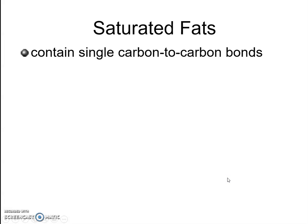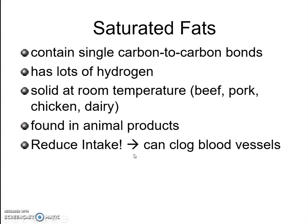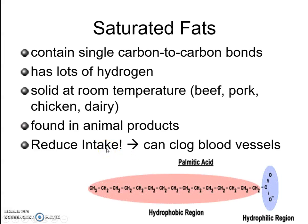A saturated fat contains single carbon-to-carbon bonds and lots of hydrogen. You can identify saturated fat because it is solid at room temperature. These are primarily animal fats found in beef, pork, chicken, and dairy like butter. This type of fat is considered bad because it can lead to arteriosclerosis, or the clogging of blood vessels, due to very few double bonds within the carbon chain.